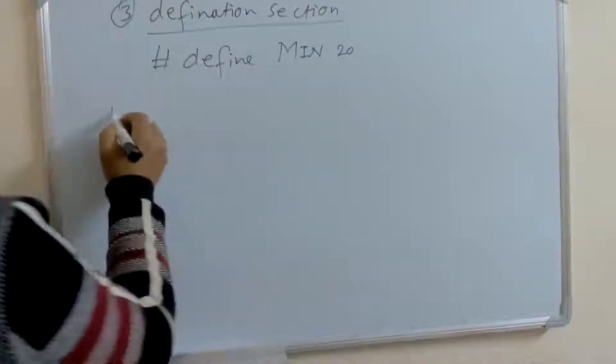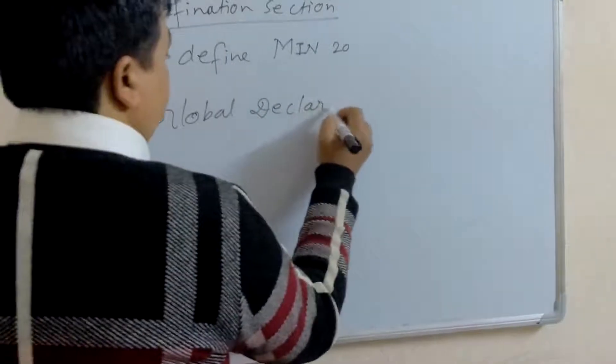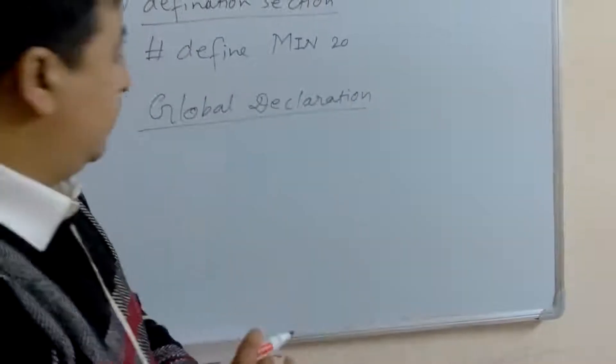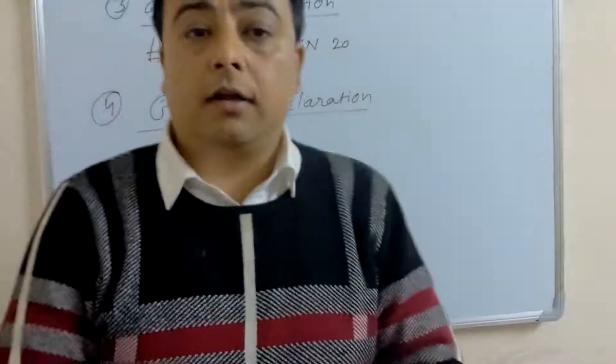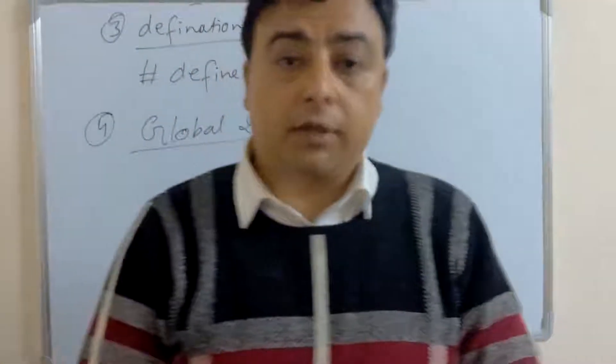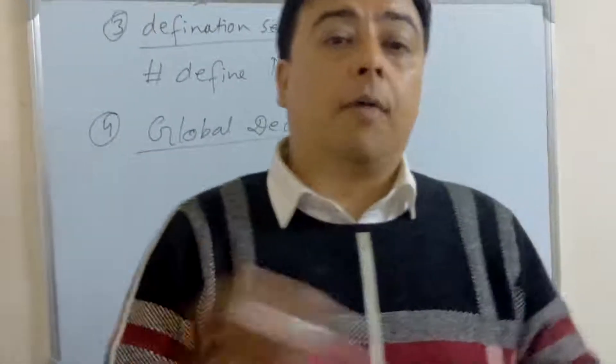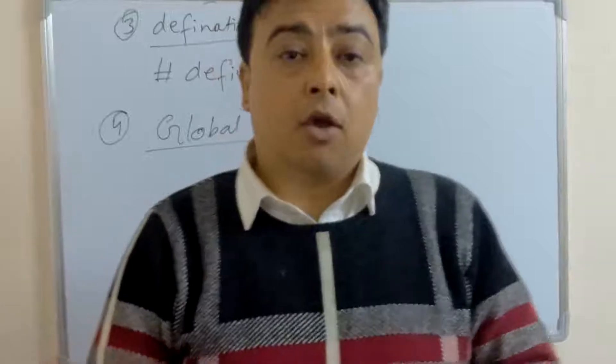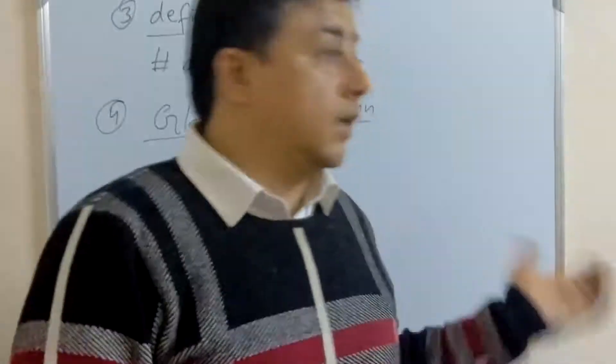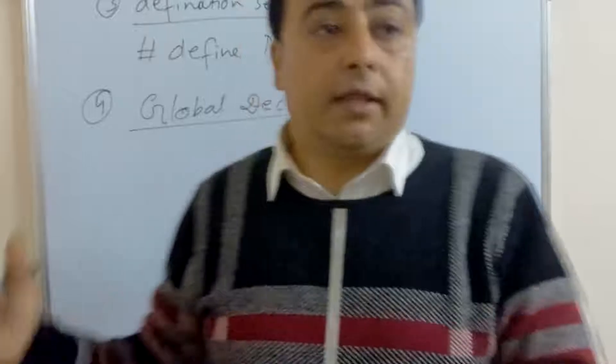The next is global declaration. Global declarations are declared outside or before the main functions. When we declare the variable globally, it means that we can use that variable in all functions in that program. They are globally accessed within the program.